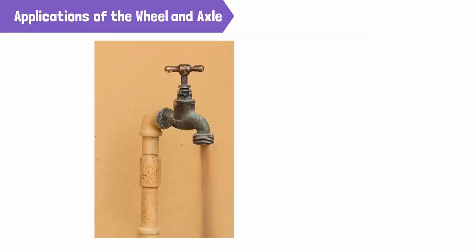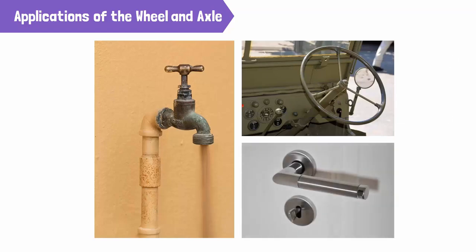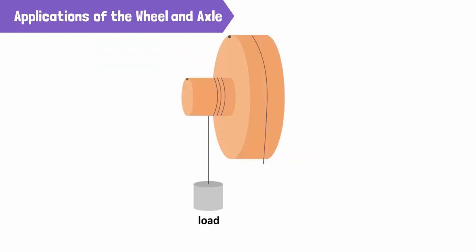Let's look at some applications of the wheel and axle in our daily life. A water tap is an example of a wheel while the shaft is an axle. Without the wheel, it is difficult to turn on the tap. The steering of a car is an example of a wheel attached to an axle that controls the wheels of the car. The knob of a door acts as a wheel attached to an axle. The wheel and axle is also used to lift heavy loads.